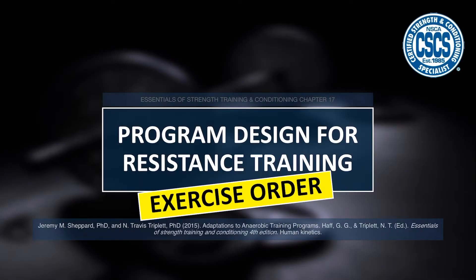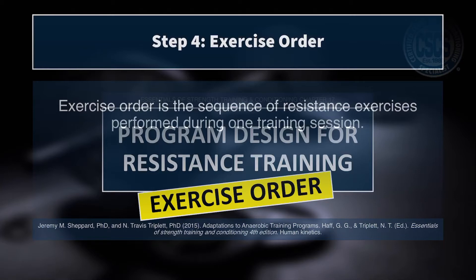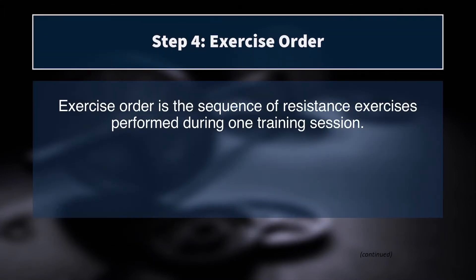This information comes from chapter 17 in the book Essentials of Strength Training and Conditioning, written by Drs. Shepard and Triplett. Now we're on the fourth step for programming for resistance training: exercise order. Exercise order is the sequence of resistance exercises performed during one training session. Should you start with back squats or with bicep curls? Should you start with multi-joint movements or single joint movements? Do we put power exercises first, in the middle, or last? There are a lot of different ways you can order exercise selection depending on your goals and train of thought.